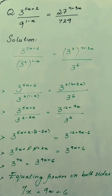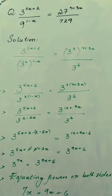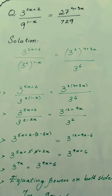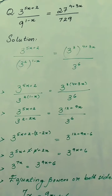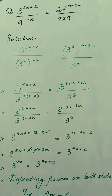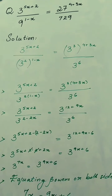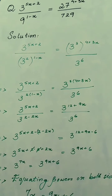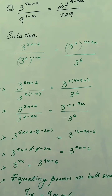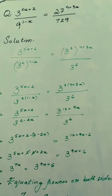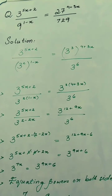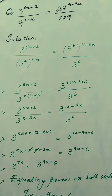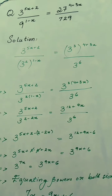Hello and welcome. In last lesson we had the type of question where we find the value of a variable by making the base the same on both sides. Now here we have a question: 3 to the power (5x+2) divided by 9 to the power (1−x) is equal to 27 to the power (4x) divided by 729.